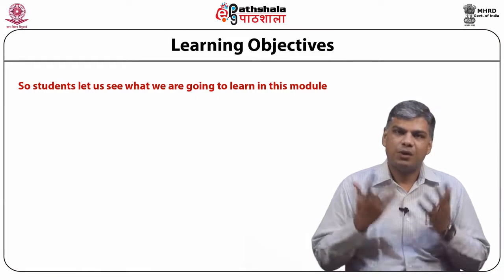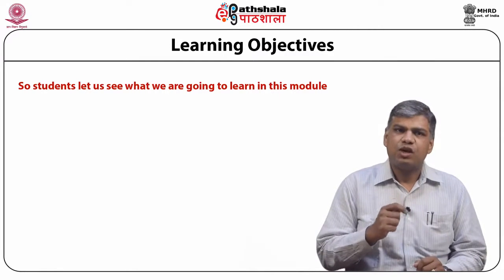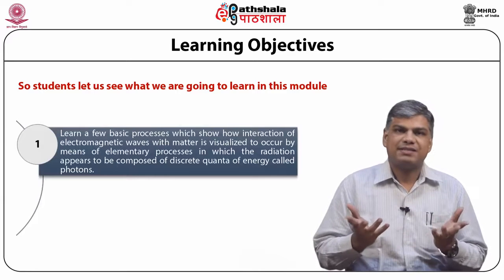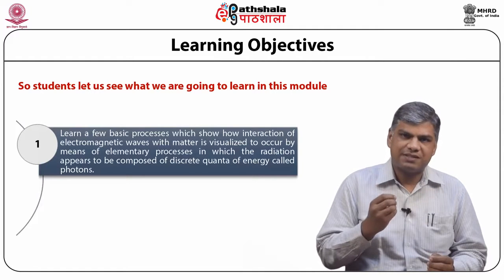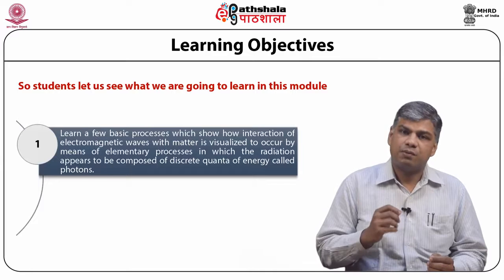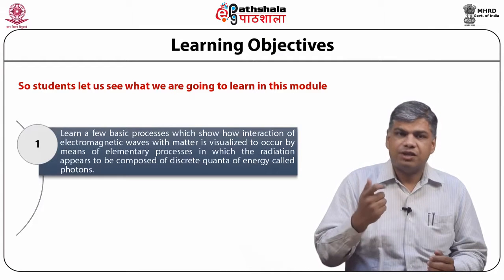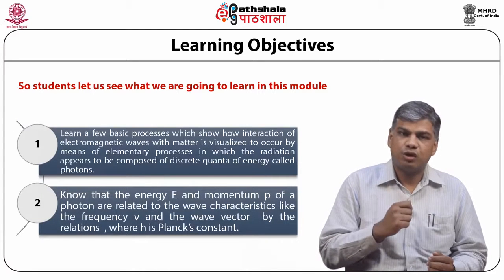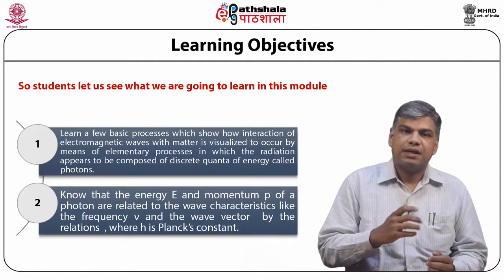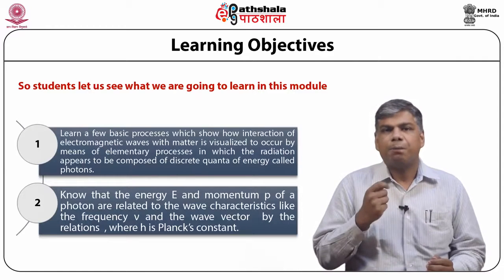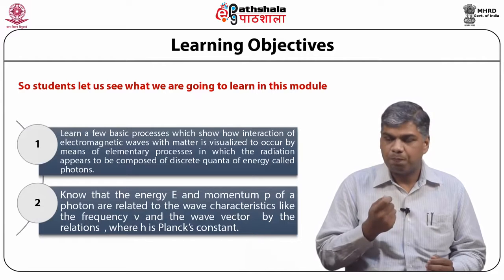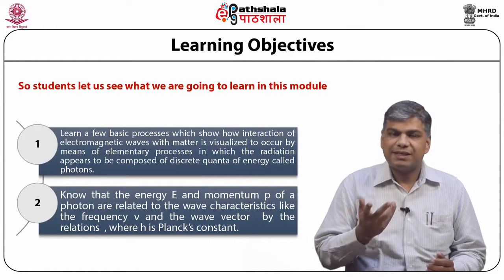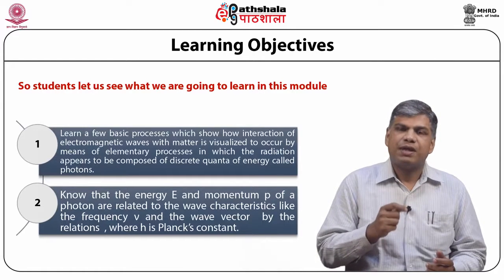Let us see what we are going to learn in this module. Firstly, we learn a few basic processes which show how interaction of electromagnetic waves with matter can be visualized to occur by means of elementary processes in which the radiation appears to be composed of discrete quanta of energy called photons. Secondly, we learn that the energy E and momentum P of a photon are related to the wave characteristics like frequency mu and wave number k by the relations E = h·mu and vector P = h-cross · vector k, where h is Planck's constant and h-cross = h / 2π.